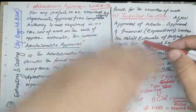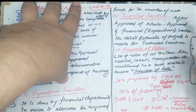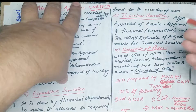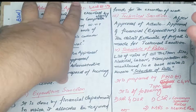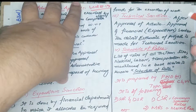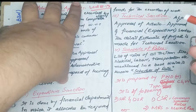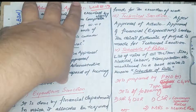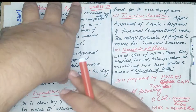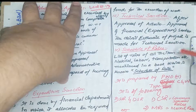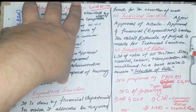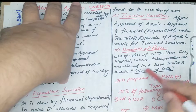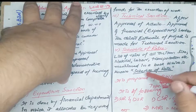The fourth topic is the schedule of rates. What is schedule of rates? It is a list of rates of all items like materials — concrete, steel, cement, sand, crash or woodwork, aluminum work — as well as excavation, labor rates, and transportation charges, etc., mentioned in a book which is known as the schedule of rates.